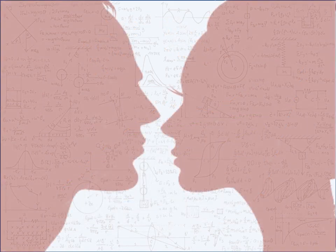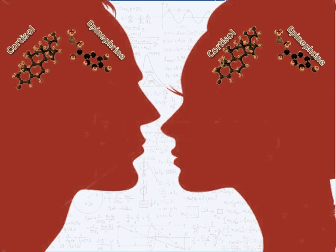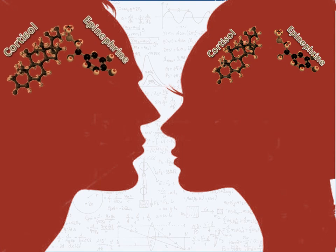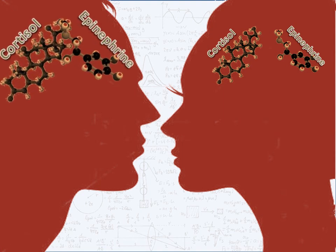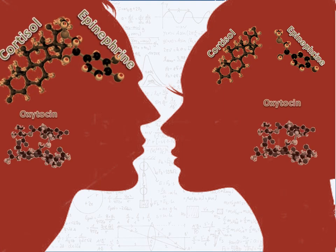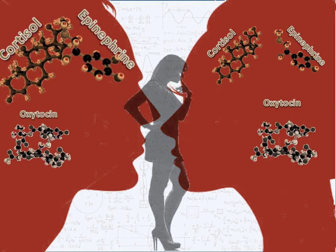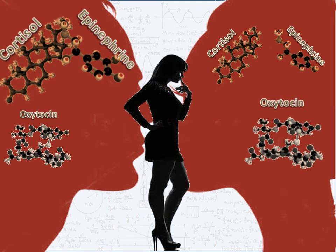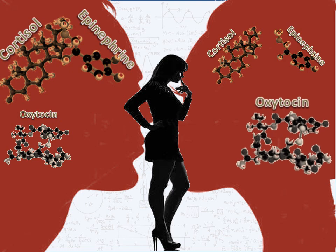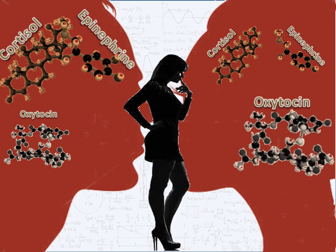Now, both genders produce these hormones, but men produce more. Women generate higher levels of an accompanying oxytocin that mediates the fight-or-flight response. This creates a new option: reconciliation — which professors did not have to consider in a class full of men.